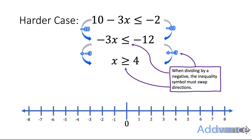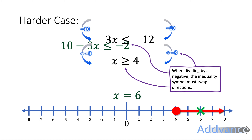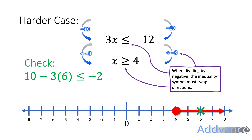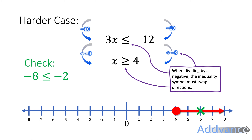The same rule applies if you multiply by a negative as well. The inequality is x is more than or equal to 4, shown on the number line with a full circle at 4 and a line going upwards. To check: choose x equals 6, which is inside the bound. Substituting into the original: 10 minus 3 times 6 is 10 minus 18, which is minus 8 — and that is indeed less than or equal to minus 2. It works.